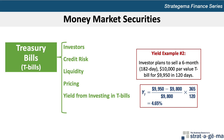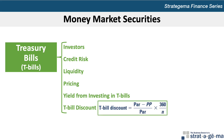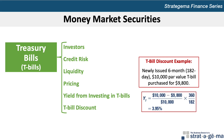Some business periodicals quote the T-bill discount along with the T-bill. The T-bill discount represents the percentage discount of the purchase price from par value for newly issued T-bills and is calculated as: (Par − PP) / Par × (360 / N). Note that the discount formula uses a 360-day year versus the 365-day year used in the yield calculation. For example, a newly issued 182-day T-bill with a par value of $10,000 purchased for $9,800 has a T-bill discount of 3.95%.